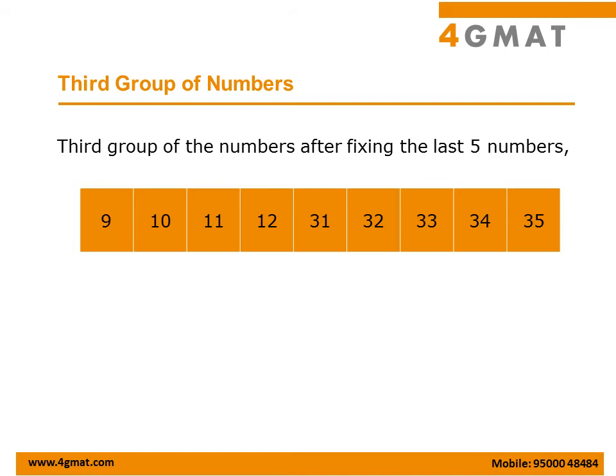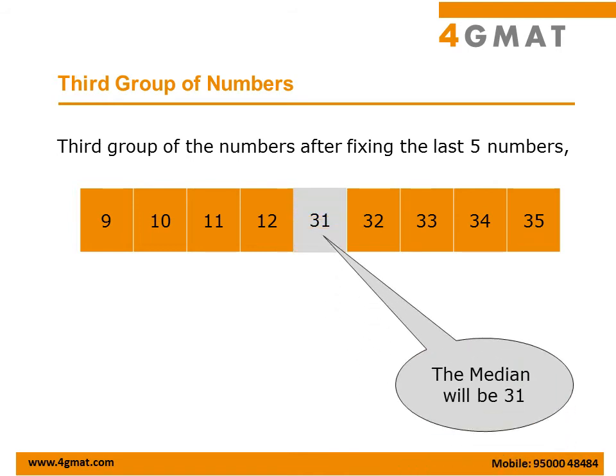Repeating the process, the next 5 highest available numbers are 31 to 35. These become the last 5 numbers of the third group. The first 4 numbers of the third group are 9, 10, 11, and 12. So the median for the third set will be 31.